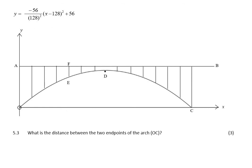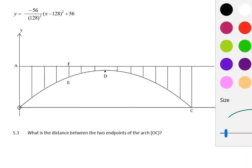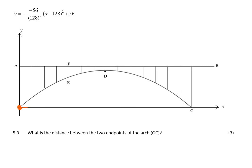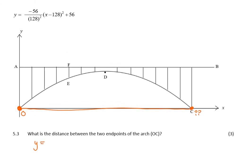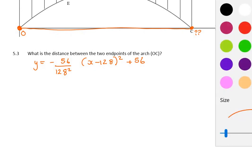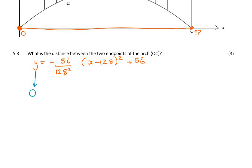Now it says, what is the distance between the two endpoints OC? So it's asking what is this distance between these two endpoints? Those are your two x-intercepts. So if I can work out my x-intercept, I know this one is at zero. The question is, can I work out that x-intercept? And I can, because I know the formula: y equals negative 56 over 128 squared, x minus 128 squared plus 56. In order to find our x-intercept, y is zero.